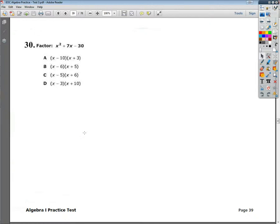Welcome, this is the Tennessee end of course practice test number 3 for Algebra 1, question number 30. The question says factor x squared plus 7x minus 30, and they give you all your answer choices.